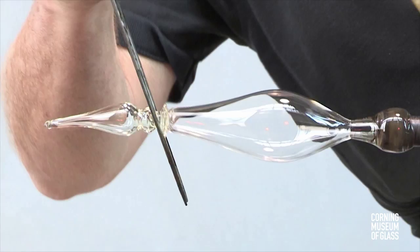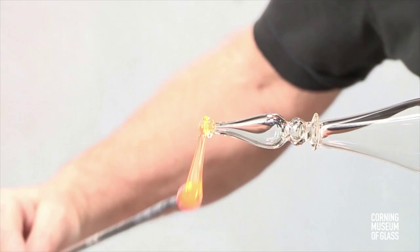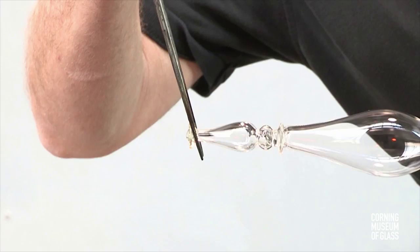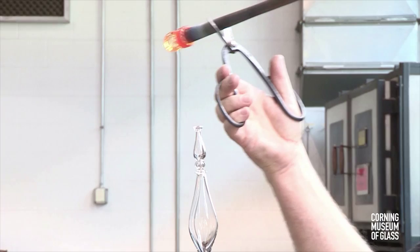Another merese is added at the bottom of the stem. The foot will sit on this merese. The last part to be added is the foot.